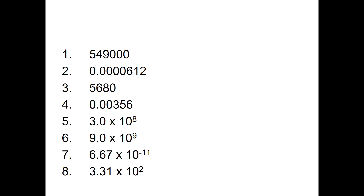For that first one right here, I'm going to do the work over here. The first thing you want to do is find that first digit, write that first digit down, then a decimal place, and then everything else that's not a zero after that. So I have one place to the left of the decimal, and here it's 5 — so 5.49 — and then I'm going to write that times 10, and then I have to figure out what exponent, so am I going to make it bigger or smaller by how many zeros?